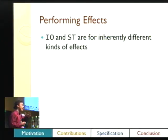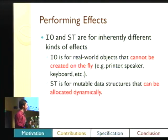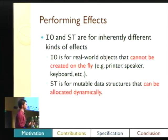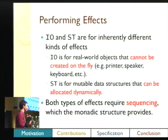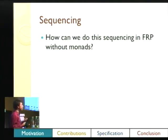IO and ST are inherently different kinds of effects. IO can use real-world devices like a keyboard, speaker, or printer, whereas the ST monad is much better for dynamically created data structures. But the reason they're both monads is because monads give us sequencing, which allows us to structure out the commands we're going to do. So the question becomes: how do you get that sequencing in FRP?